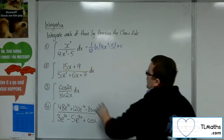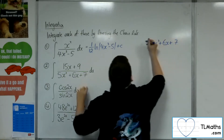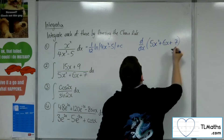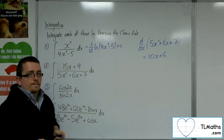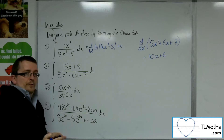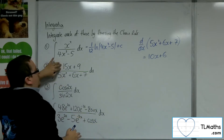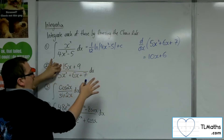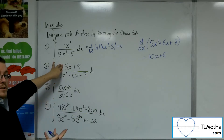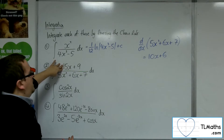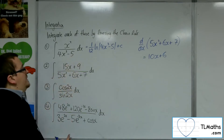So number 2: just looking at the denominator, 5x squared plus 6x plus 7. Differentiating that, we get 10x plus 6. Now I've got 15x plus 9 in the numerator. It might not look immediately obvious what the multiple is, but if we think about how do we get from 15x to 10x — I divide by 3 and times by 2, so I times 15 by 2 thirds to get to 10. And I can times 9 by 2 thirds to get to 6.